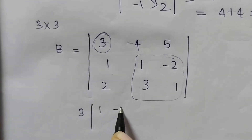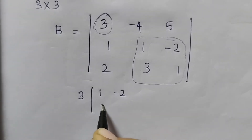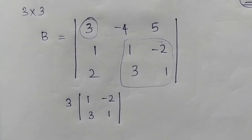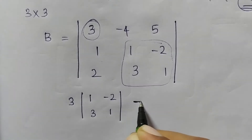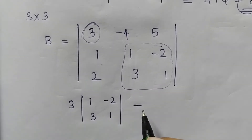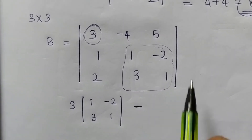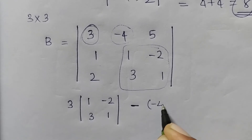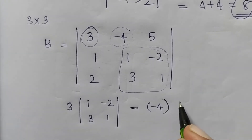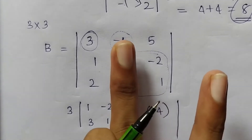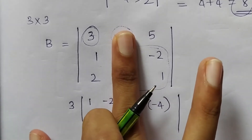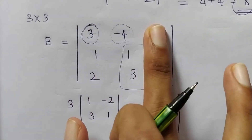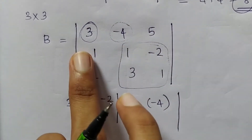We have elements 1, minus 2, 3, 1 in the matrix. For the first element, the sign is positive. For the second element, the sign is minus. For minus 4, the second element uses the same method — cancel its row and column to find the remaining elements.